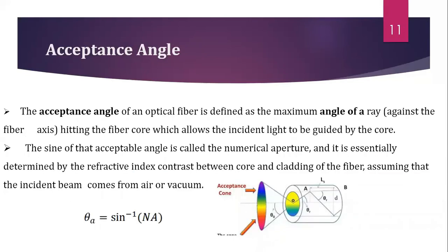Next is acceptance angle. A light ray guided through an optical fiber must enter the core with an angle less than the acceptance angle. If a ray enters the fiber with an angle greater than the acceptance angle, it will be lost into the cladding. The acceptance angle is defined as the maximum angle at which a light ray may enter into the core and propagate along the core medium. The formula is: θa = sin⁻¹(NA). This acceptance angle can be easily calculated for meridional rays.